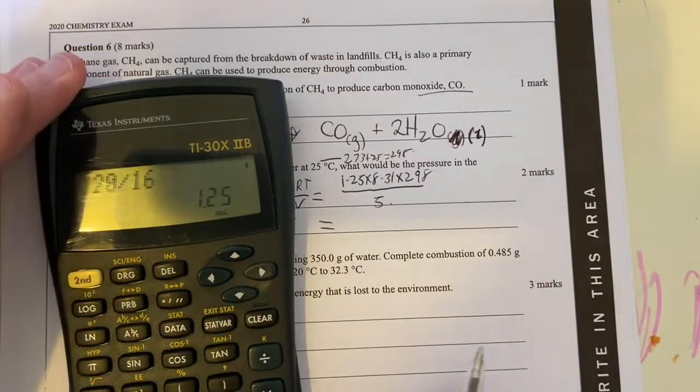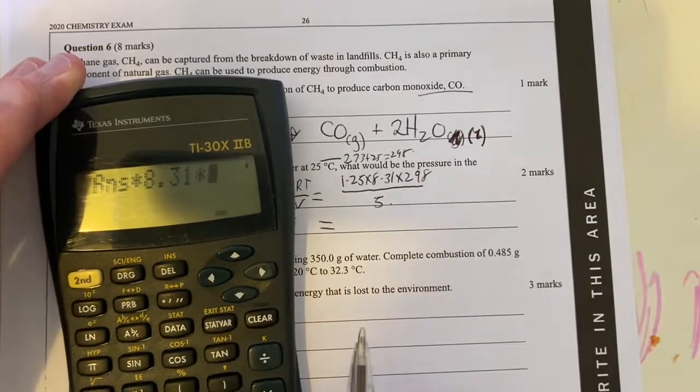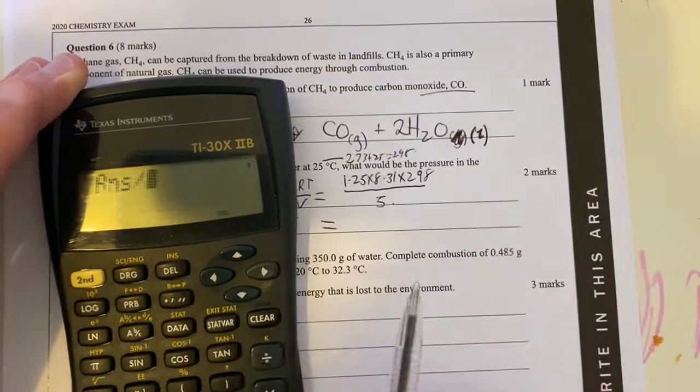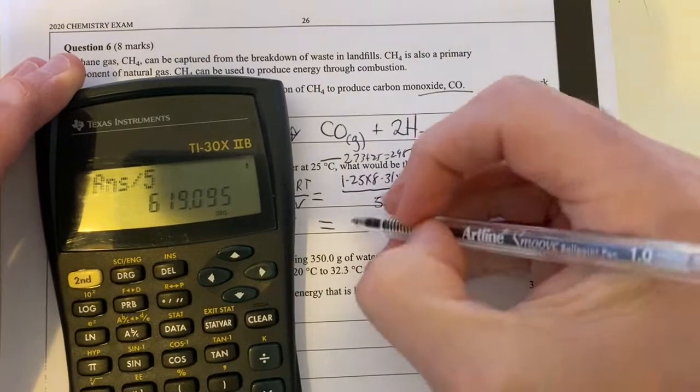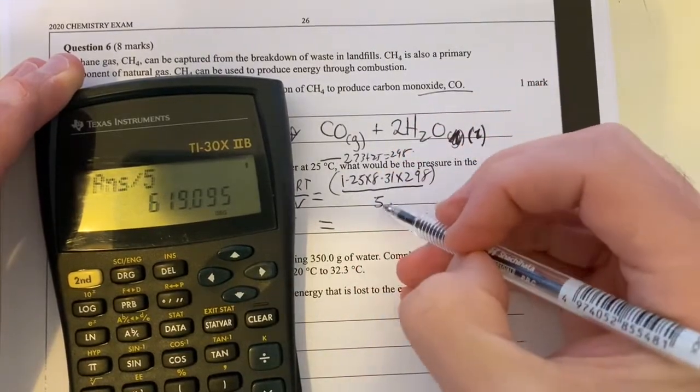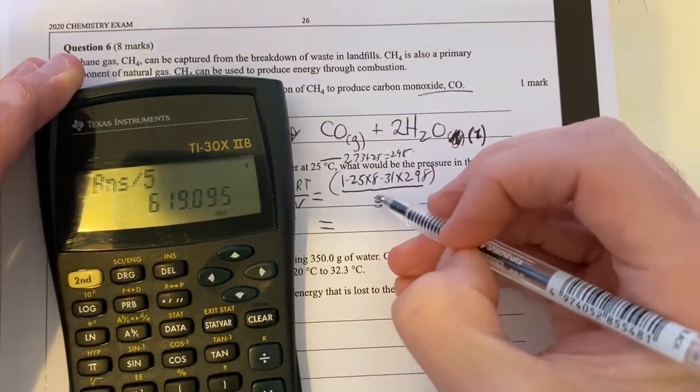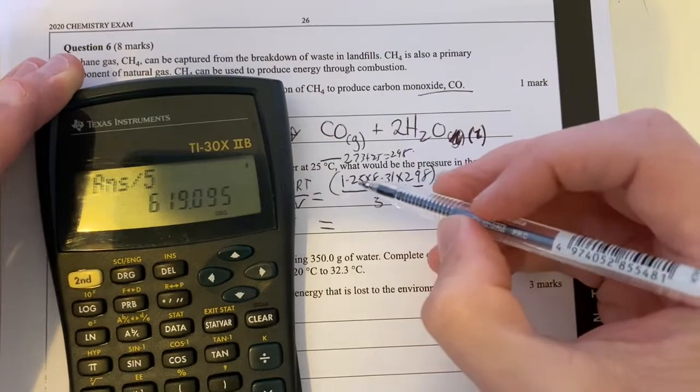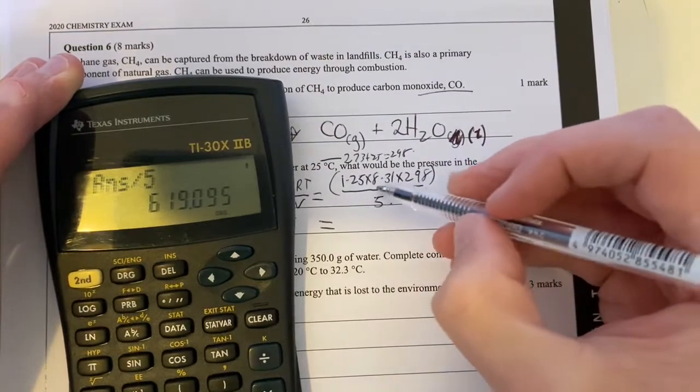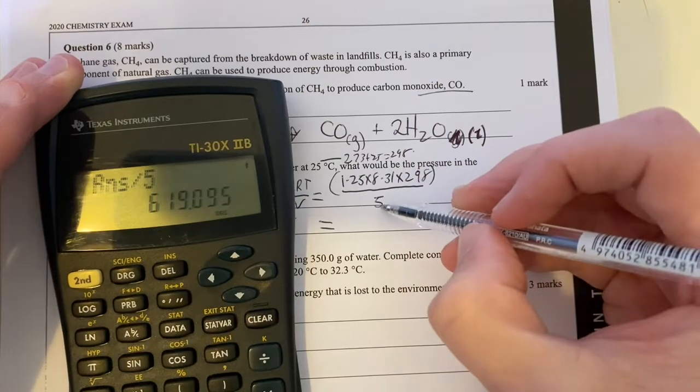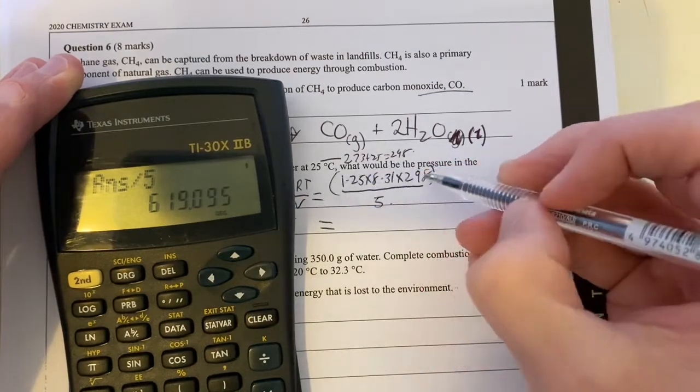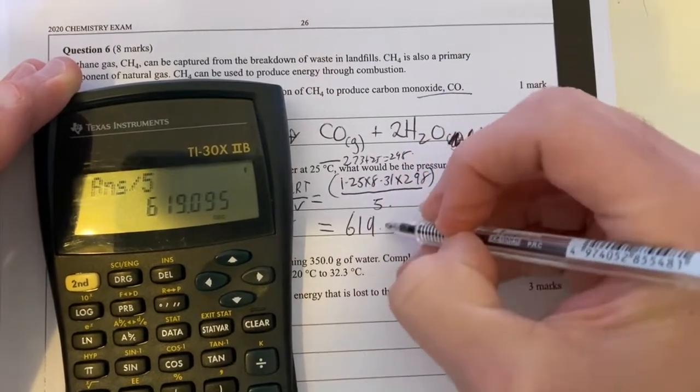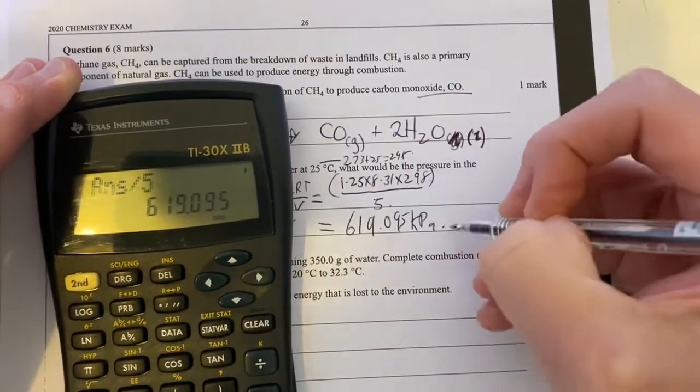So I take my 1.25, I'll times that by 8.31, times that by 298 equals this number, and then I divide that by 5. I do that in two stages because I want to know what this whole number at the top is, then divide it by 5. If I didn't do that in two stages, I run the risk of it dividing only this number here by 5 and multiplying it out. So I always like to, if I've got a fraction here, or if I'm working on a lot of things happening up the top and one thing down the bottom, I'll do everything up the top, work out what that answer is, and then I'll divide it by 5 in the end.